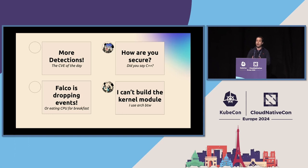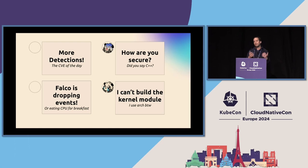Or we might have someone asking about performance — there are systems that operate with millions of events per second and Falco needs to keep up. Or some people have trouble installing it because, you know, a kernel module or eBPF probe can be hard to install. But we use them because that's how we get our data. And if you've ever tried installing something like VMware, you know it's not easy, and we want the Falco experience to be the best.